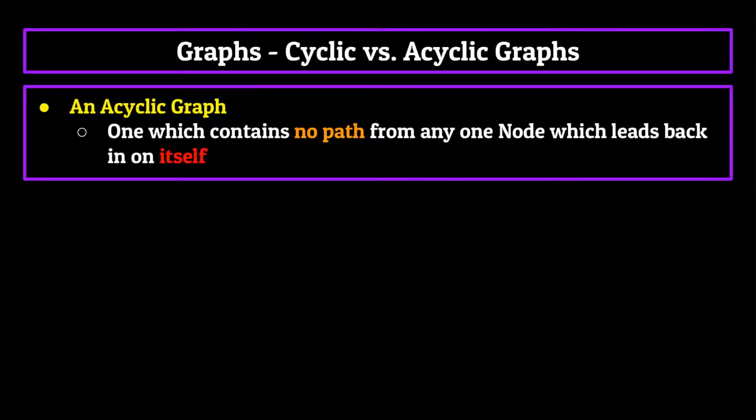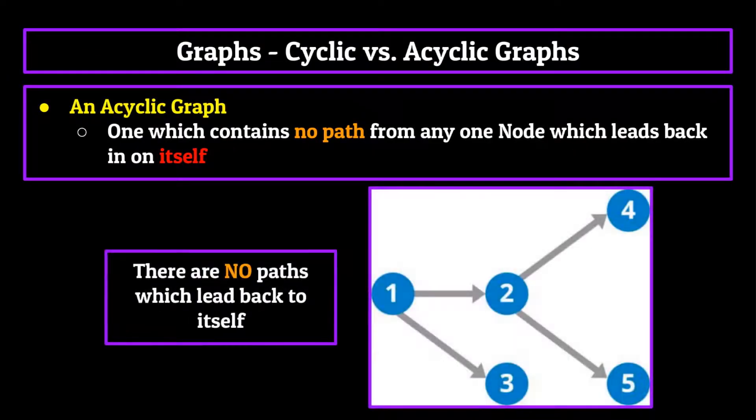An acyclic graph is one which contains no path from any one node which leads back in on itself. This property can really only apply to directed graphs like we mentioned previously. What this basically means is that for any given node, there is no path which will eventually lead back to itself.